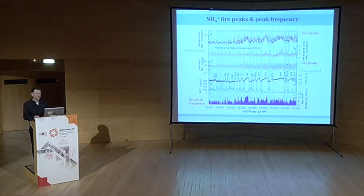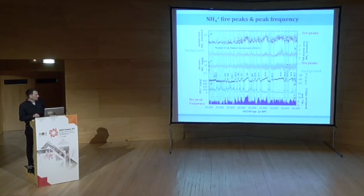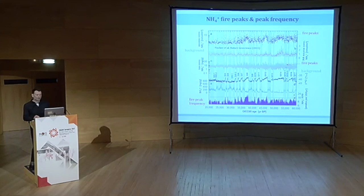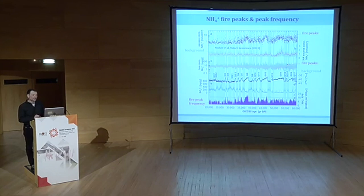Another approach is to look at information independent of transport. Here I use ammonium as a fire proxy: the background comes from nitrogen turnover in soils, but on top of that, individual peaks are related to fire events in North America. The number of fire events is not dependent on how much loss occurs during transport. I count the number of peaks in a 200-year window, and you can see a very clear stadial-interstadial variability in fire frequency.